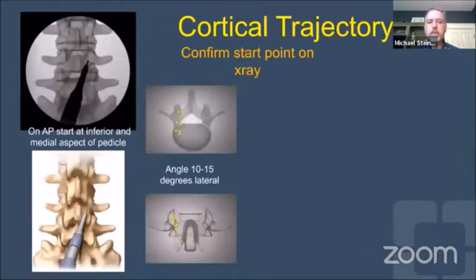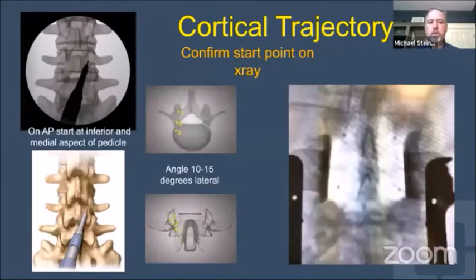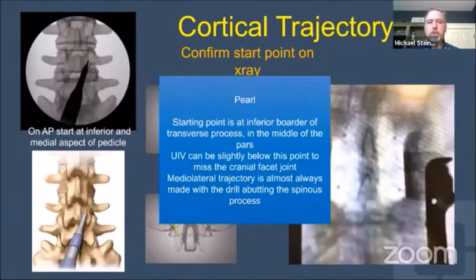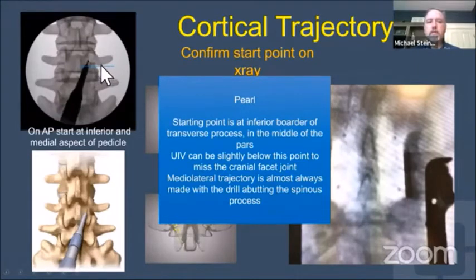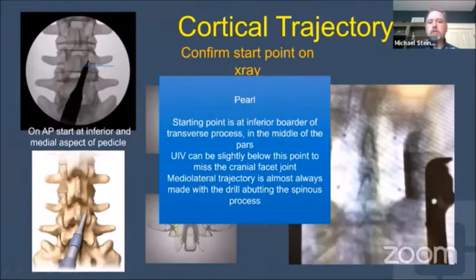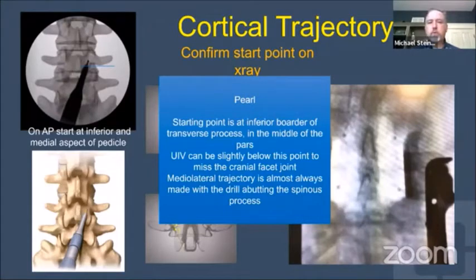Once we have our starting point, we aim about 10 to 15 degrees lateral, bisect the pedicle, and head up into the lateral dense cortical bone. On fluoroscopy, the starting point on AP is right at the mid-pars, at the level of the inferior transverse process. At the upper instrumented vertebra, you can start a little lower to miss the upper facet joint, then aim 10 to 15 degrees lateral. For most patients, the correct trajectory is achieved by leaning the drill up against the spinous process at the starting point — that is almost always the correct medial-lateral trajectory.